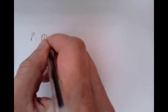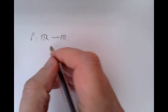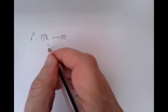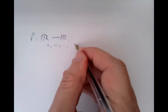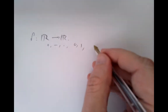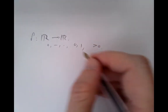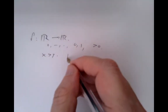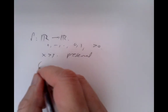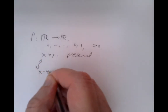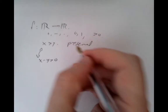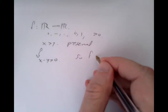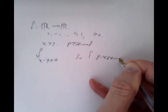Since f preserves positivity and also preserves subtraction, it must preserve the ordering: x > y if and only if x − y is positive. So any automorphism of ℝ preserves order. We can also define the absolute value |x| = x if x ≥ 0, and −x if x < 0. This is defined entirely in terms of positivity and arithmetic, so it must also be preserved by f: f(|x|) = |f(x)|.